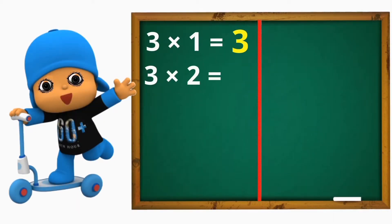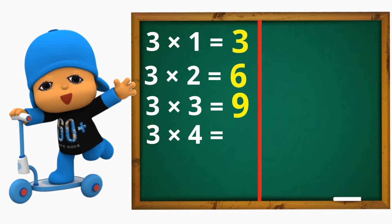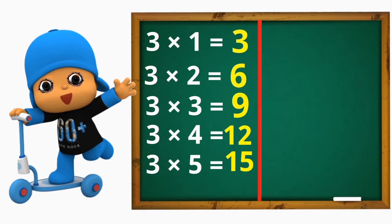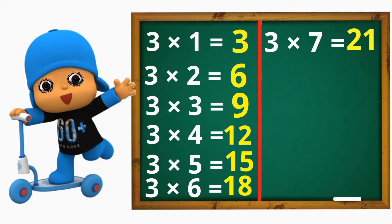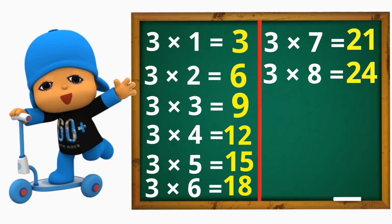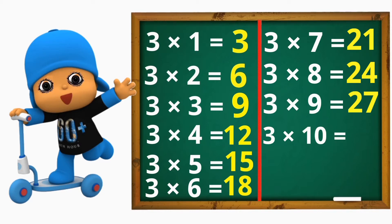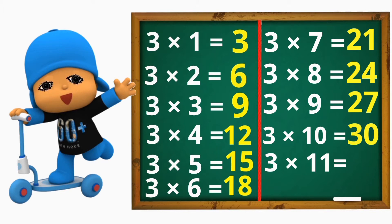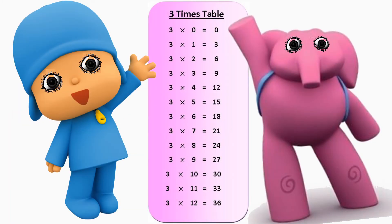3 x 1 is 3, 3 x 2 is 6, 3 x 3 is 9, 3 x 4 is 12, 3 x 5 is 15, 3 x 6 is 18, 3 x 7 is 21, 3 x 8 is 24, 3 x 9 is 27, 3 x 10 is 30, 3 x 11 is 33, 3 x 12 is 36. This is the table 3 song.